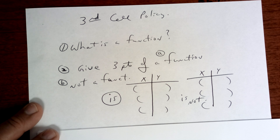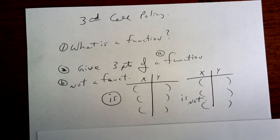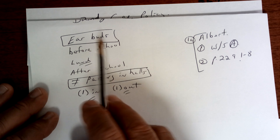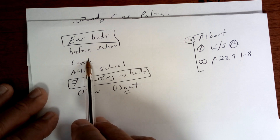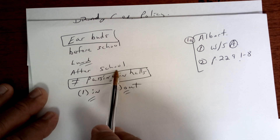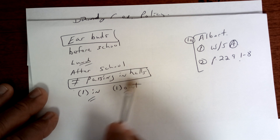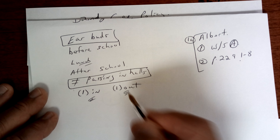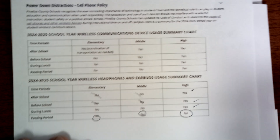Let's go over the cell phone policy for all classes. Look up here and listen — earbuds: you can only wear headphones or earbuds before school, at lunch, or after school, not passing in the hallways. If you wear your headphones or earbuds, one in and one out. Here are the rules — take a look and make sure you understand because they will hold you accountable.